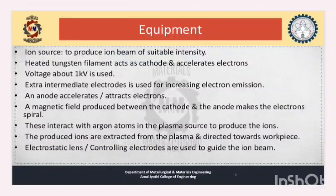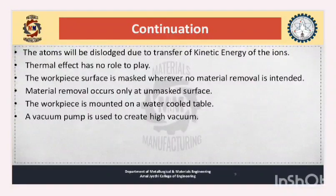The produced ions are extracted from the plasma and directed towards the workpiece. Electrostatic lenses or controlling electrodes are used to guide the ion beam. The atoms are dislodged due to transfer of kinetic energy of the ions, and thermal effects have no role to play. The workpiece surface is masked wherever no material removal is intended, so material removal occurs only on unmasked surfaces. The workpiece is mounted on a water-cooled table, and a vacuum pump is used to create high vacuum.